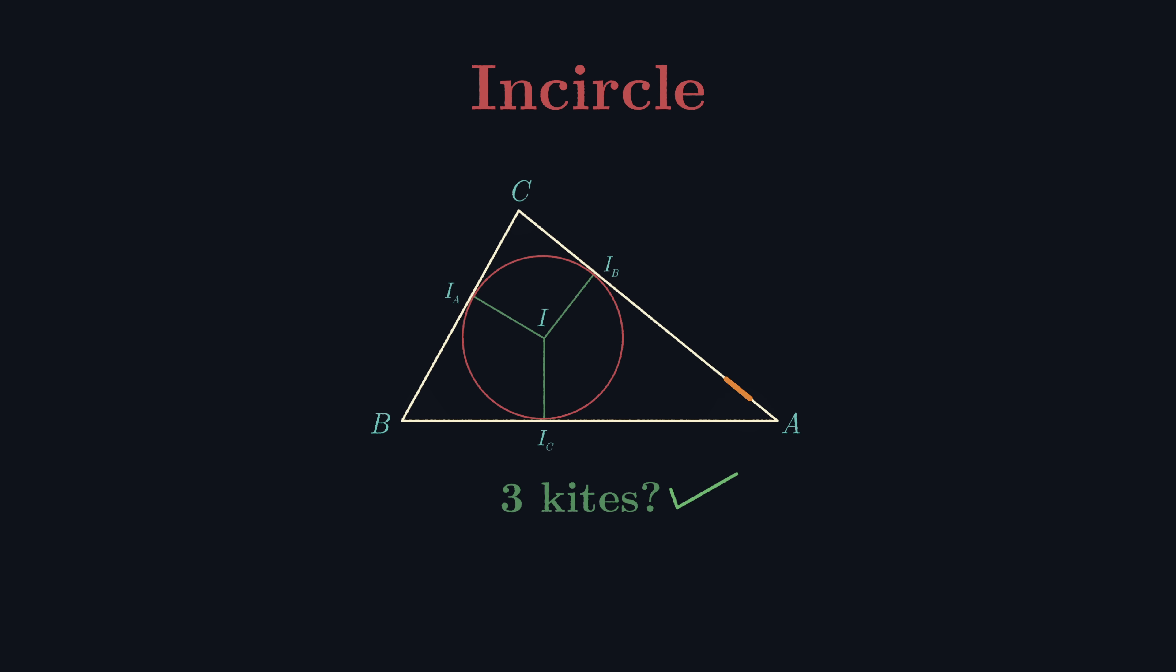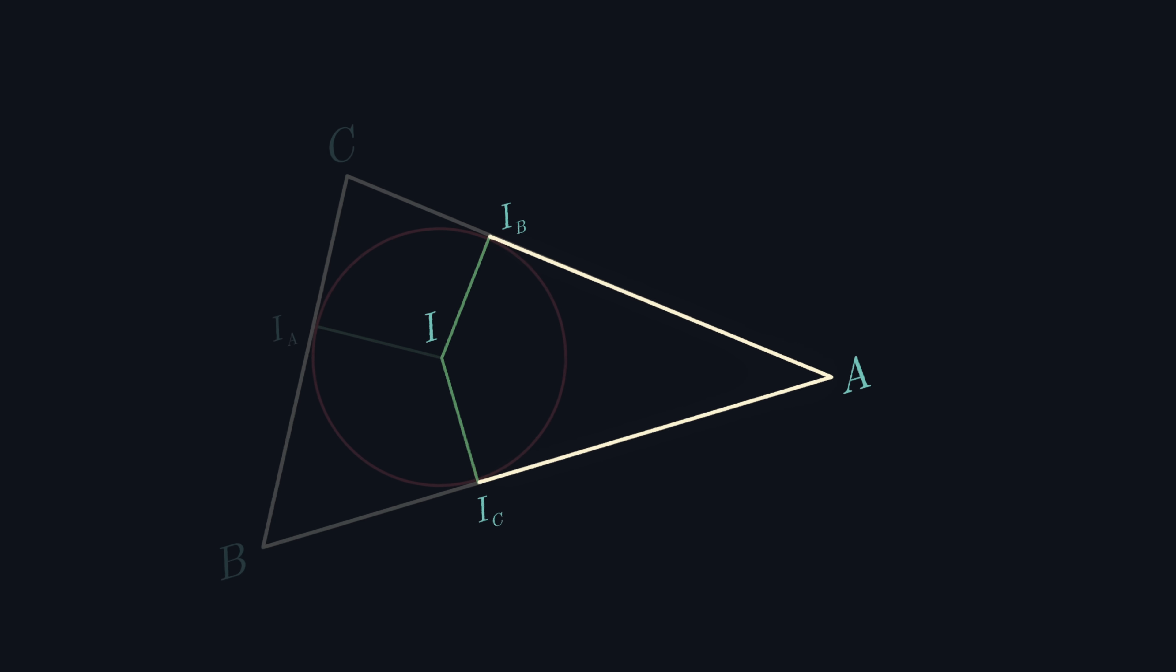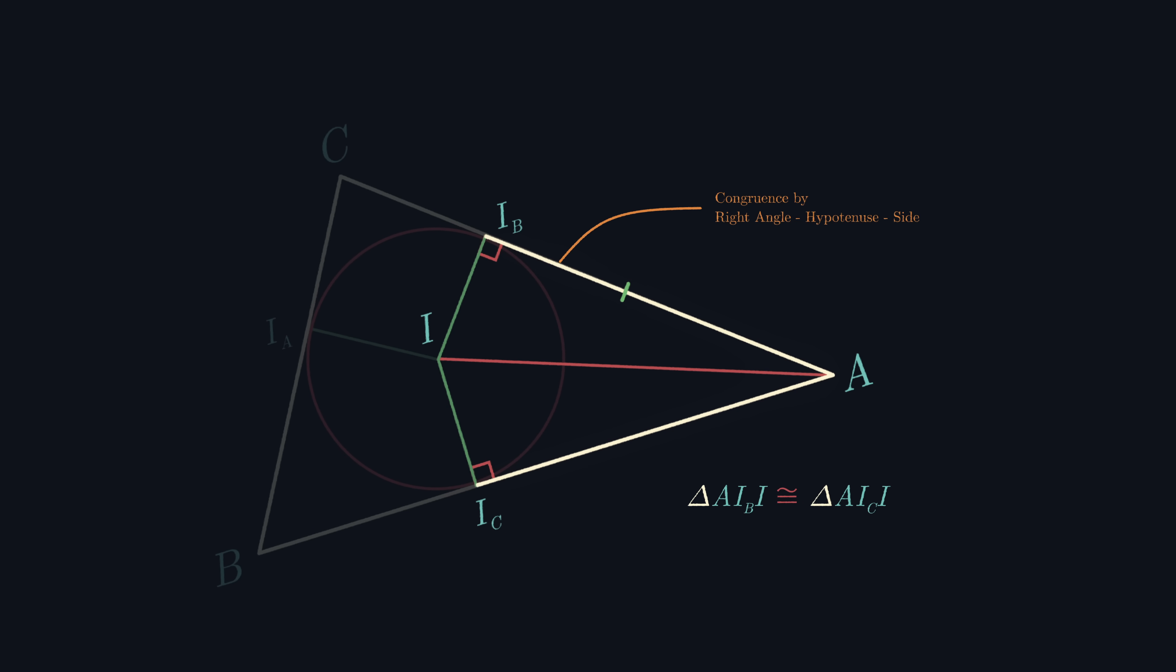In fact, all the quadrilaterals I've highlighted on the screen are kites. We can see this by zooming in on I, IB, A, IC, and using the fact that tangents meet the radii at 90 degrees, we can spot a pair of congruent triangles, which tells us that A-IB equals A-IC.